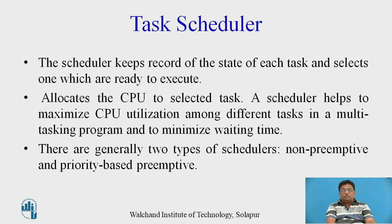Now, the task scheduler. The scheduler keeps records of the state of each task and selects one which is ready to execute. The task scheduler selects only one task at the same time and allocates the CPU to the selected task. A scheduler also helps to maximize CPU utilization among different tasks in a multitasking program and to minimize waiting time. There are generally two types of scheduler: non-preemptive and priority-based preemptive scheduler.